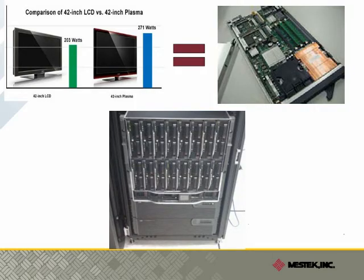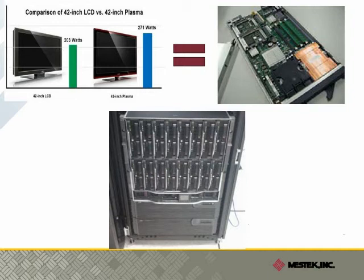Although there are many types of digital devices, they ultimately have one thing in common: the information passes through a computer server. The electrical power consumed by one of these devices is roughly equivalent to the power consumed by a 42-inch plasma television, and the industry crams as many of those servers into a cabinet — sometimes called a 42U rack — as they possibly can, making for power densities that become hard to imagine.